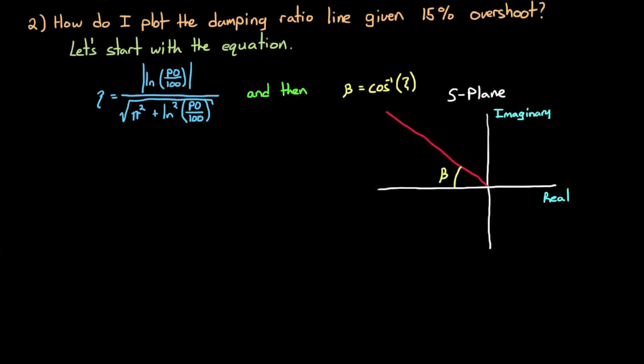Then you can convert the damping ratio ζ into an angle β by taking the inverse cosine of it. β is the angle off the real axis in the s-plane, off the negative real axis. So if you draw a straight line from the origin at that angle, all points along that line have the exact same damping ratio. We can visualize this equation in action by plotting it in MATLAB.